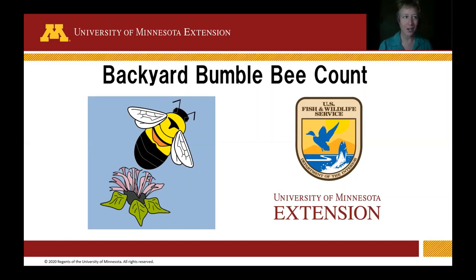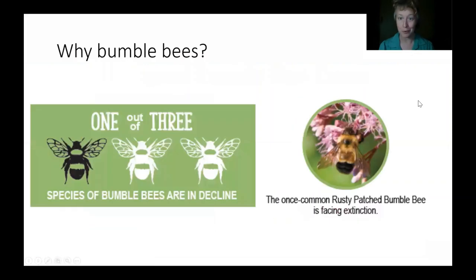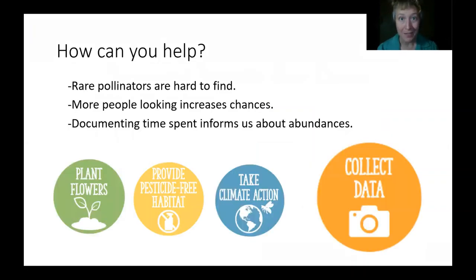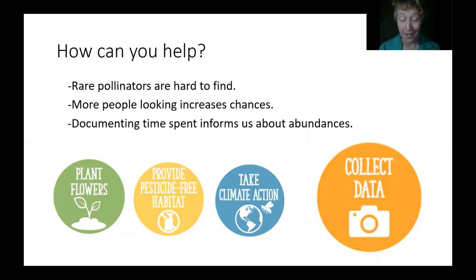I want to quickly talk about why we are focusing on bumblebees. One out of three species of bumblebees are in decline. The once common rusty patch bumblebee is now facing extinction. There are a few different things you can do to help: you can plant more flowers, keep those flowers and other habitats free of pesticides, take climate action, and you can also collect data. Today we're focusing on the collect data end of things.